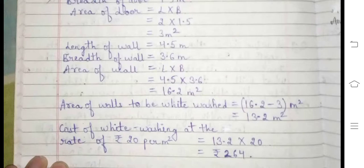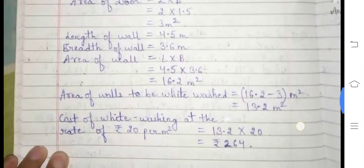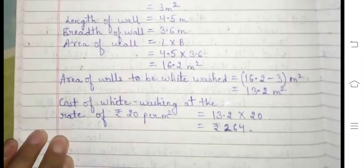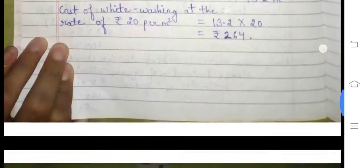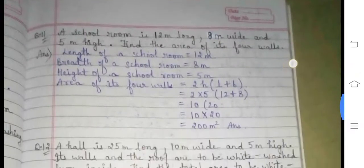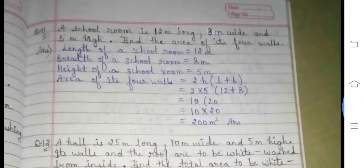Area to be whitewashed = area of wall − area of door = 16.2 − 3 = 13.2 meter square. Wait, area to whitewash is 15.3 meter square. Cost at rate of 20 rupees = 20 × 13.2, giving the answer of 264 rupees.